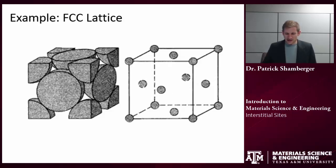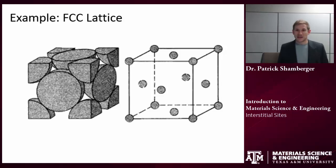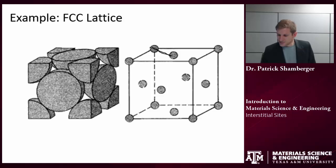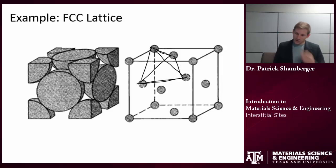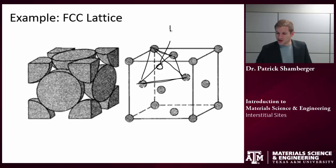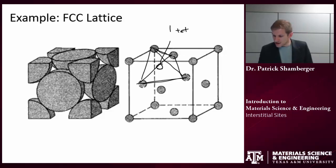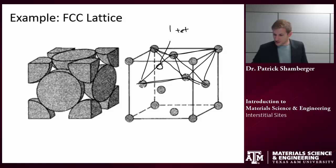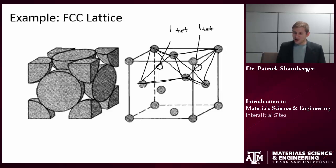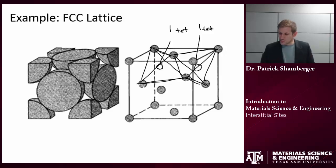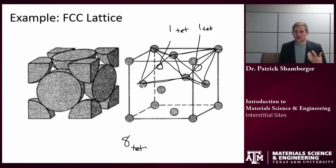Let's think about tetrahedral sites in the FCC lattice. If I connect these two atoms and these two atoms, we're going to find a tetrahedron — four faces, each an equilateral triangle — and right in the middle of that tetrahedron is one tetrahedral site. And that's not the only tetrahedral site; if I connect these two and these two, I will find another tetrahedral site. Both of those are entirely within the unit cell. Work this through by yourself — count up how many different tetrahedral sites there are. You should come out to eight tetrahedral sites in the FCC lattice.